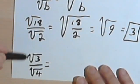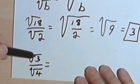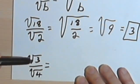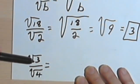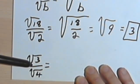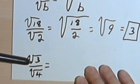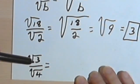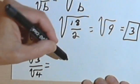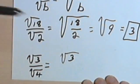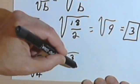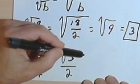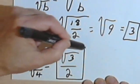Just because you can take two radical signs in a fraction and put them under one radical sign, it doesn't mean you always want to. In this case, making the fraction 3 fourths — in other words, the square root of 3 fourths — wouldn't make much sense because we don't know how to take the square root of 3 fourths, and 4 doesn't divide into 3 very nicely. So the simplest thing to do here is to leave the numerator as the square root of 3, and for the denominator realize that the square root of 4 is 2.